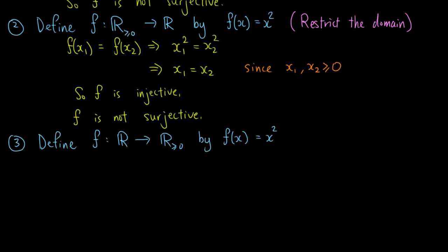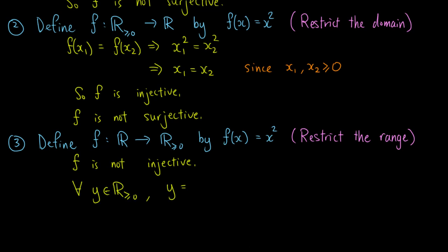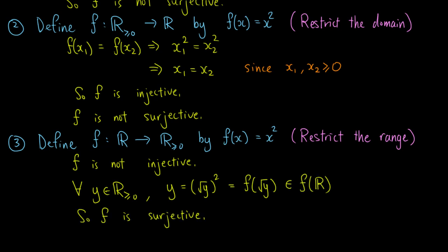For the third example, let's define f from the real numbers to the non-negative real numbers by f of x equals x squared. That is, we restrict the range of the function in the first example. Note that f is not injective, because again 1 and negative 1 are both mapped to 1. However, for all elements y in the non-negative real numbers, y equals the square of the square root of y, which equals f of the square root of y, which is in the image of f. So f is surjective.